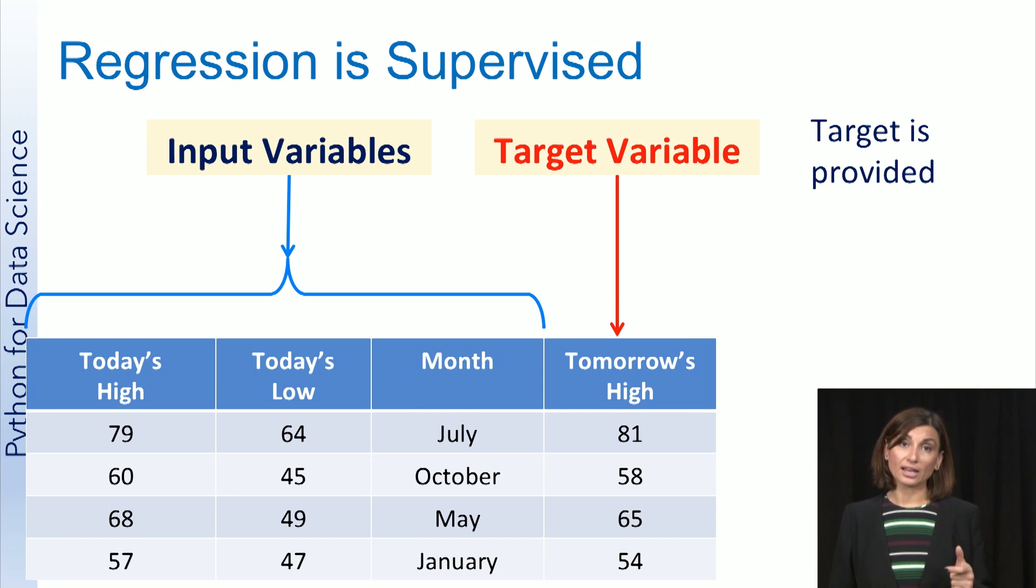Recall that in a supervised task, the target is provided, while for an unsupervised task, the target is not available or not known. Since the target label is provided for each sample as a numeric value here, the regression task is a supervised one, similar to classification.